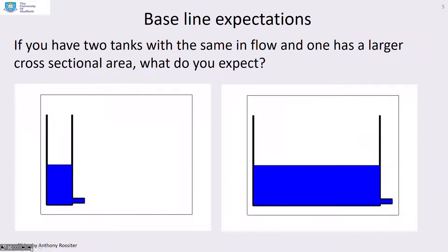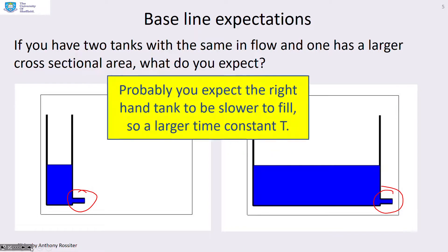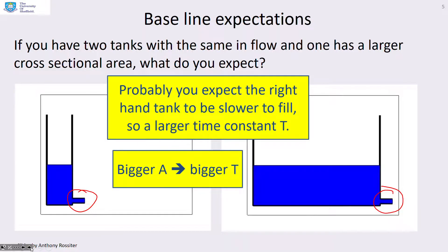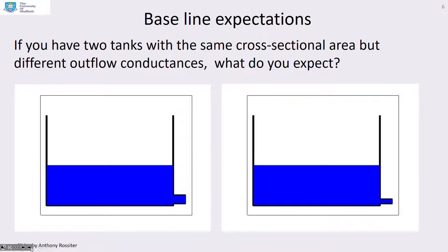For our baseline expectations, consider two tanks with different cross-sectional areas but the same outflow pipes. For a fixed flow in, you would expect the right-hand tank — with the larger cross-sectional area — to be slower to fill, needing more volume to reach the same depth. So the expectation is: as area gets bigger, the response gets slower, meaning a bigger A implies a bigger time constant.